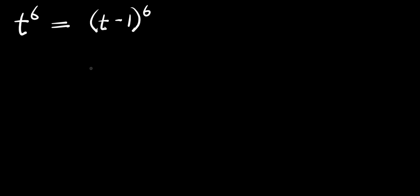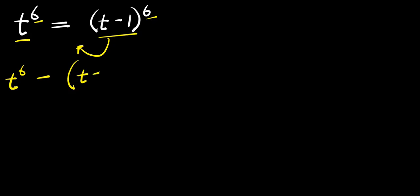How to solve this exponential problem and find all values of t that satisfy this equation: t to the power 6 equals (t minus 1) to the power of 6. I simply move this over here, so I have t^6 minus (t minus 1)^6 equals 0.